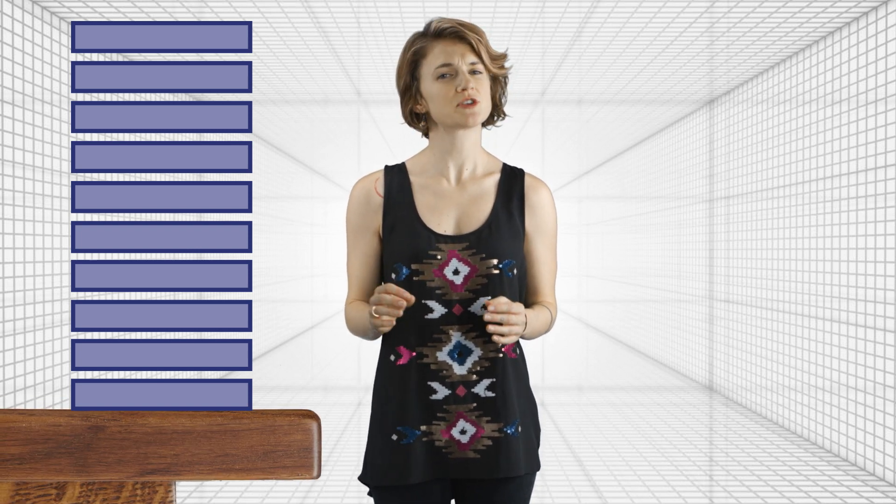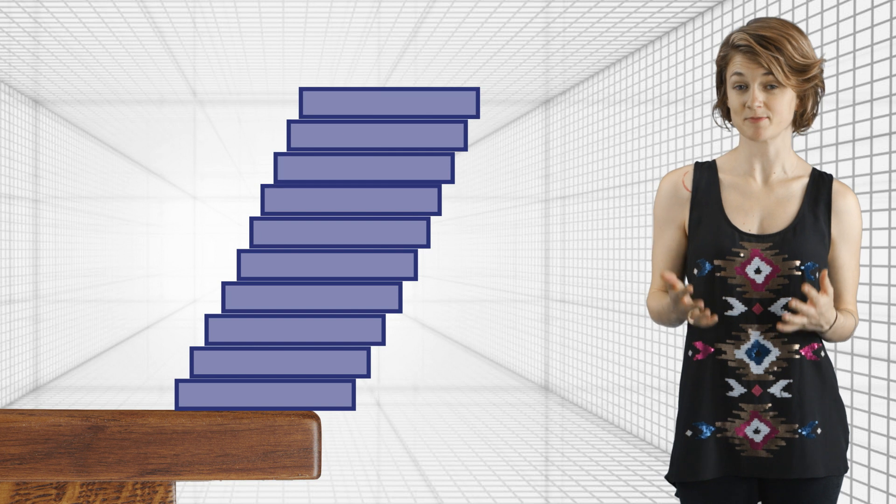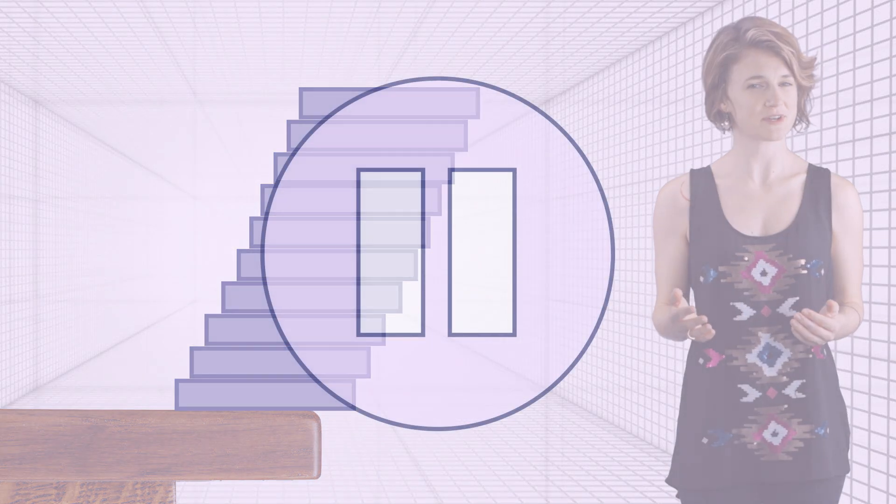Say I give you 10 identical 1 centimeter long blocks. You want to balance them off the edge of a table so they make a little bridge, like this. How should you do it so the bridge extends as far from the table as possible? Pause here if you want to think about it.